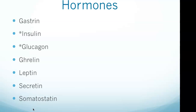Ghrelin's function is to increase hunger; its stimulus for release is an empty stomach. Leptin's stimulus for release is fat in the bloodstream, and its function is to reduce hunger by signaling satiety. Secretin's stimulus for release is chyme in the duodenum; it stimulates the pancreas to release bicarbonate. Somatostatin's stimulus for release is acid in the stomach; its function is to inhibit gastric secretion and slow digestion.